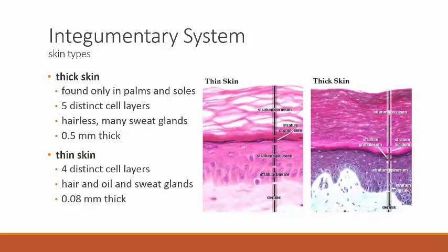Thick skin has five very distinct cell layers, and we're going to look at the names of those layers shortly. Some other characteristics of thick skin are that it's hairless — no hairs on the palms or soles — but there are many, many sweat glands. This is why people get sweaty palms or sweaty feet.